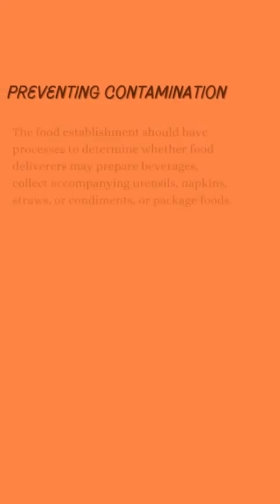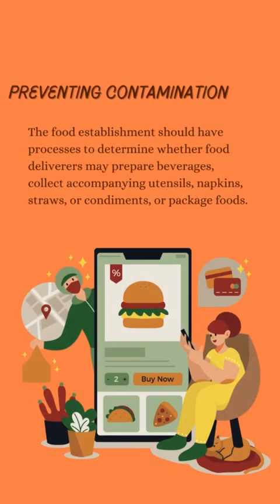The food establishment should have processes to determine whether food deliverers may prepare beverages, collect accompanying utensils, napkins, straws, or condiments, or package foods.